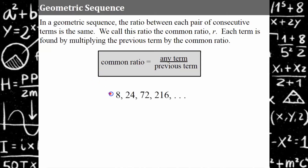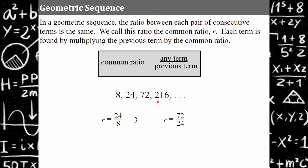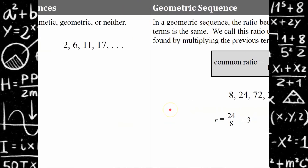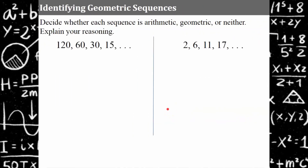In the sequence 8, 24, 72, 216, we divide 24 by 8 and get 3. Notice that 8 × 3 = 24, 24 × 3 = 72, and 72 × 3 = 216. To double-check, divide 72 by its previous term — the ratio is still 3. So this is a geometric sequence with a common ratio of 3.